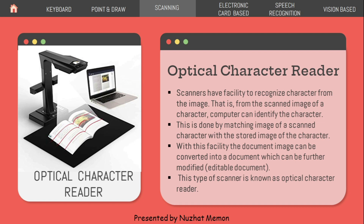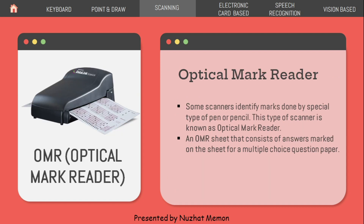OMR stands for optical mark reader. Sometimes scanners identify marks made by a special type of pen or pencil — this type of scanner is known as an optical mark reader (OMR). These machines are used to check OMR sheets — sheets where answers are marked for multiple choice question papers.